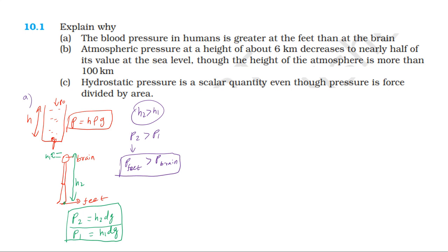First, we have the answer. Blood pressure is greater at feet than at the brain because H2 is greater than H1. Second,